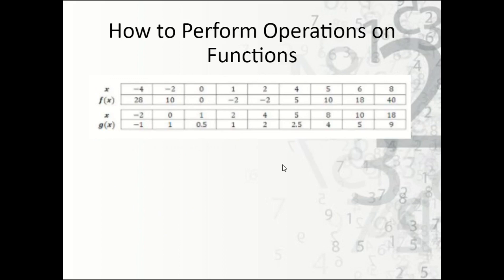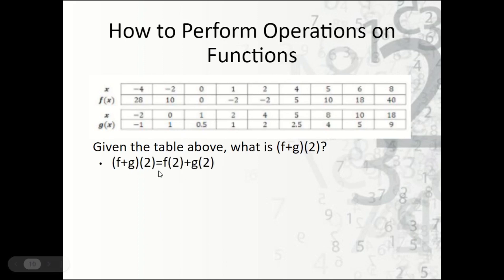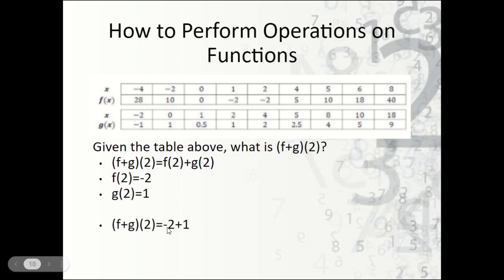Now let's look at another example. What is f plus g of 2? When we write that out, f plus g of 2 is the same thing as f of 2 plus g of 2. We find f of 2, which is negative 2, and g of 2, which is 1, and add them together. Negative 2 plus 1 is negative 1. So when you see f plus g, f minus g, or anything like that, it means take f of the value, apply the operation, then g of that same value.